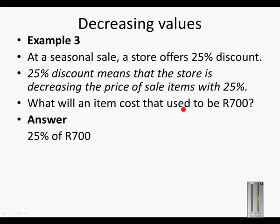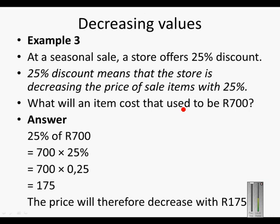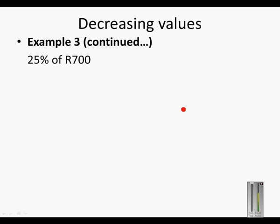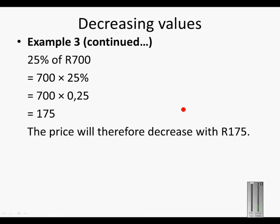First we have to calculate what 25% of 700 is. 700 times 25% is equal to 700 times 0.25, and that is 175. So the price will decrease by R175. 25% of R700 is the same as 700 times 0.25, which is 175. When the price decreases by R175, it means we subtract 175 from 700, which gives us R525.